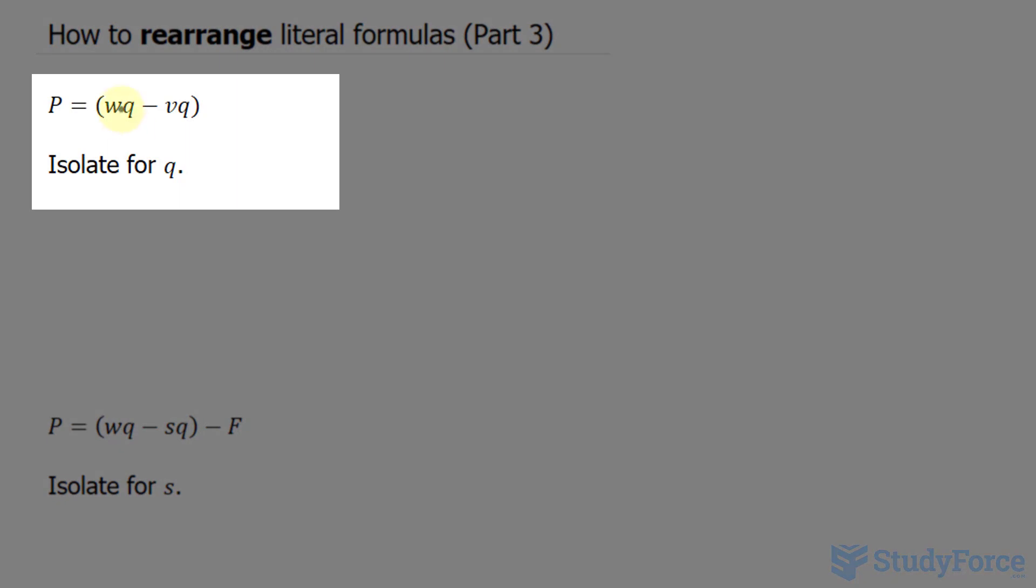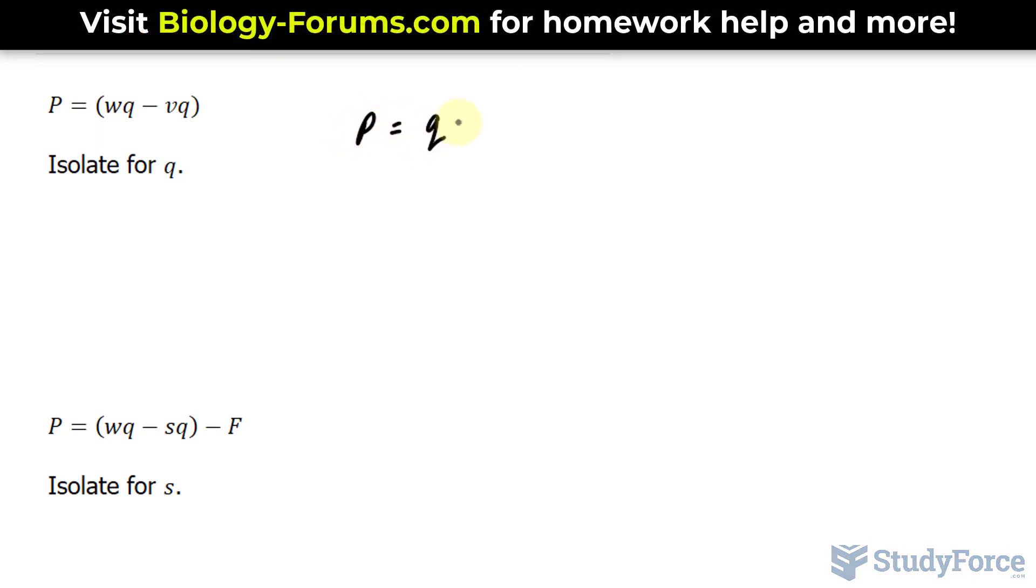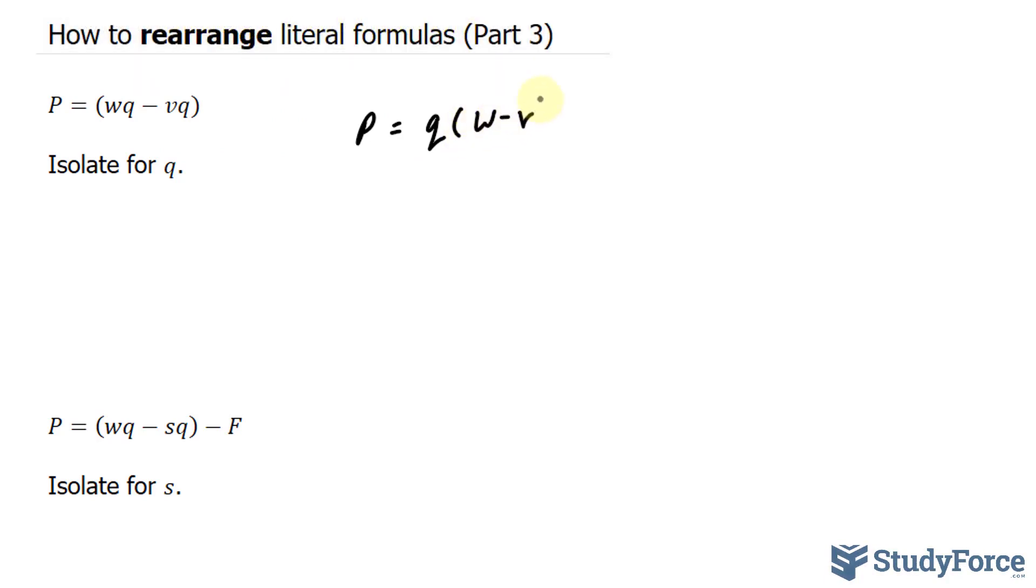P is equal to bracket WQ minus VQ, and what they want us to isolate for is Q. The target variable is found in two terms, so in a situation like this you want to see if you can common factor. Between these two terms, Q is common factorable, so I can rewrite this as P is equal to Q open bracket, W minus V.